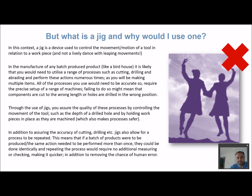So what is a jig and why would you use it? If you look up the definition, you'll find two versions. One is a device that controls the motion or movement of a tool in relation to a workpiece — for example, something that holds a piece of work when you're drilling or cutting it. The other definition is a lively dance with leaping motions — that's obviously not what we're talking about here.